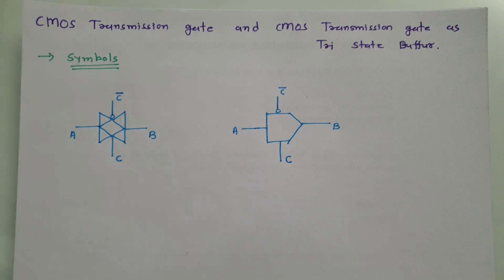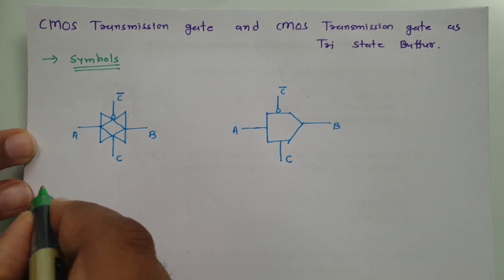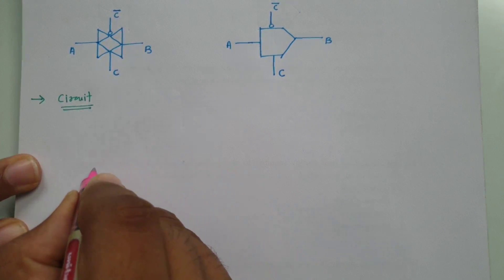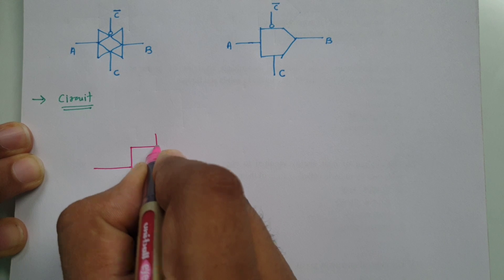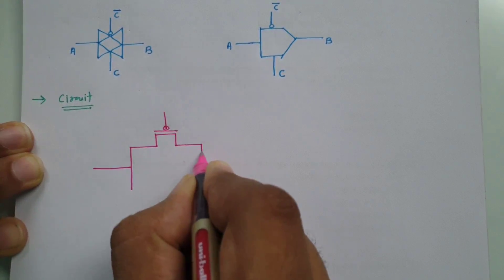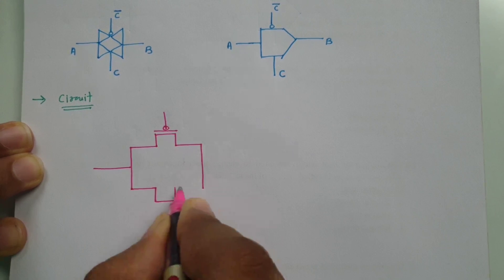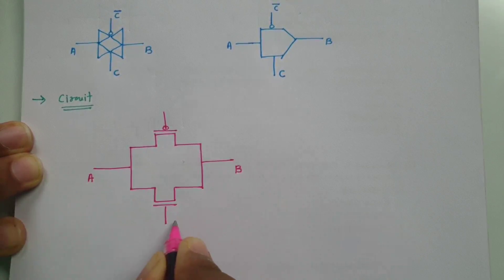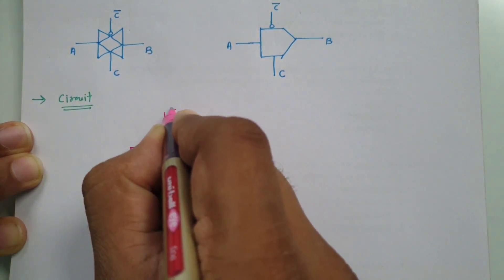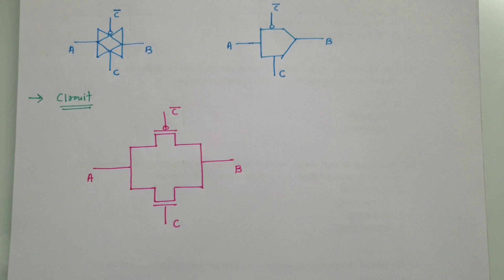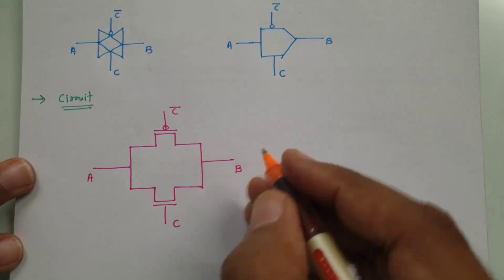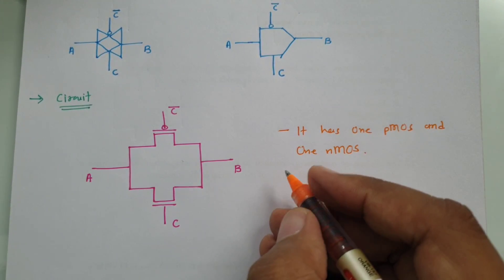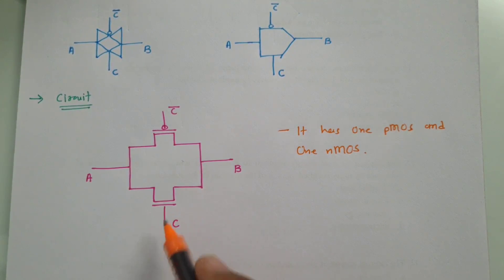Now I'll explain the basic circuit structure of CMOS transmission gate. It has one PMOS and one NMOS, connected such that this is my PMOS and this is my NMOS. This is my input A, this is my output B, and control signal C over here, and the complement of it connected over here. Ultimately, CMOS transmission gate has one PMOS and one NMOS, and the gate is complementary to the control.